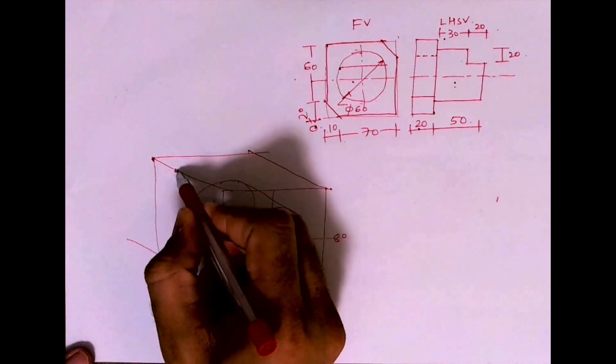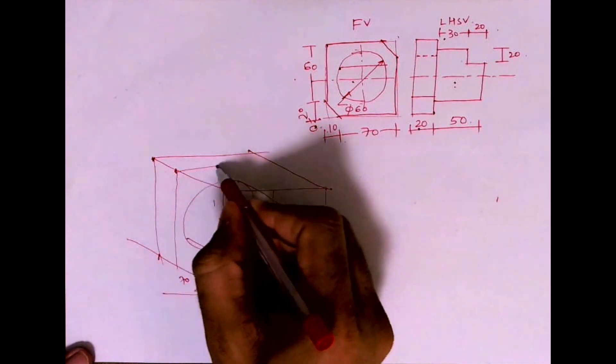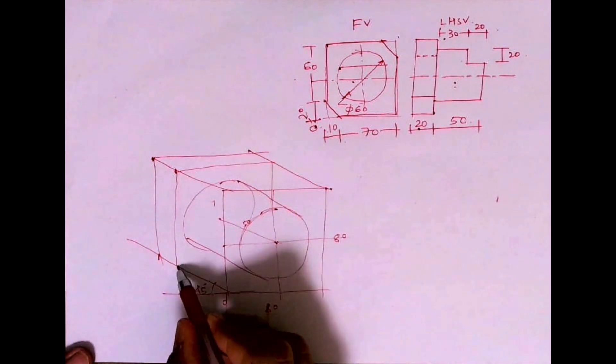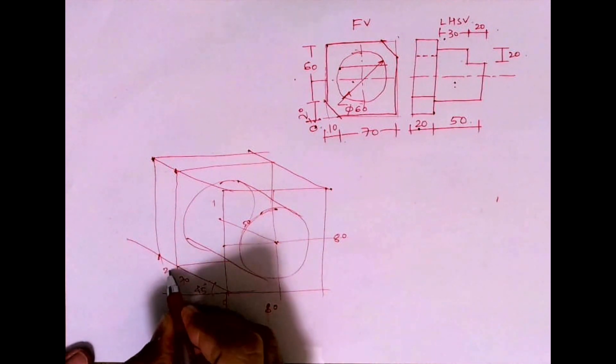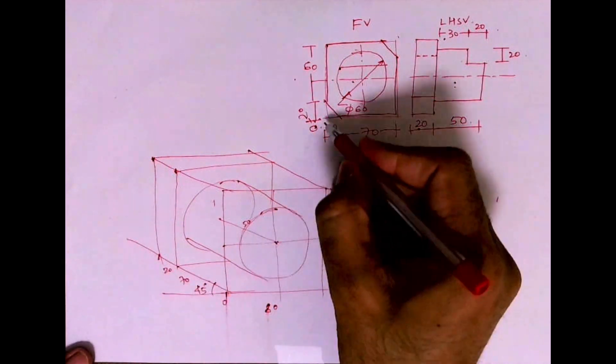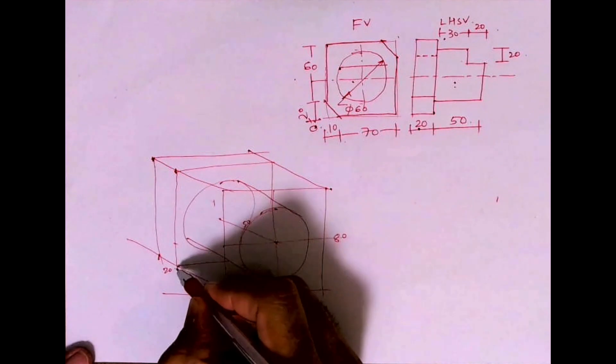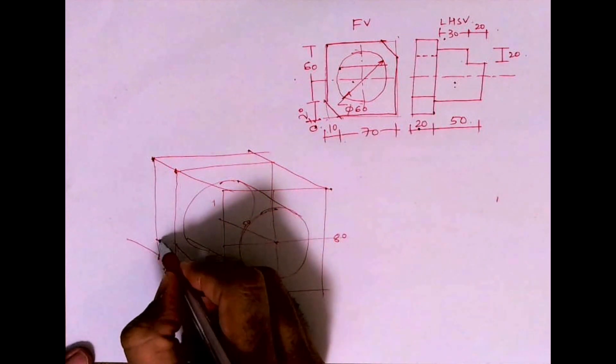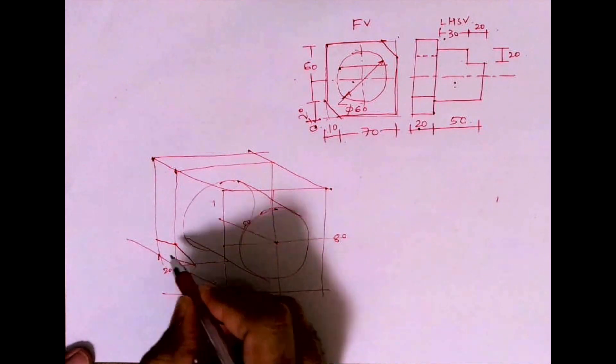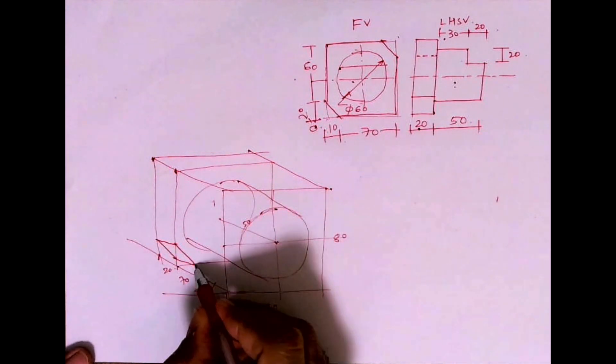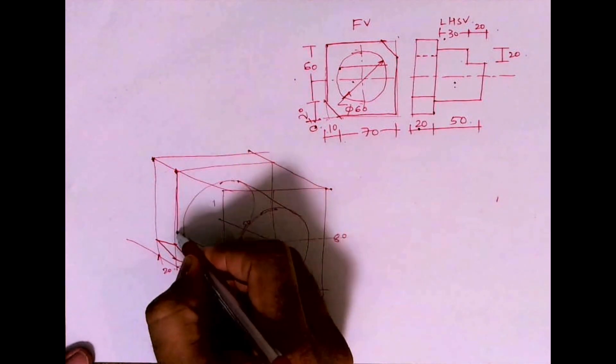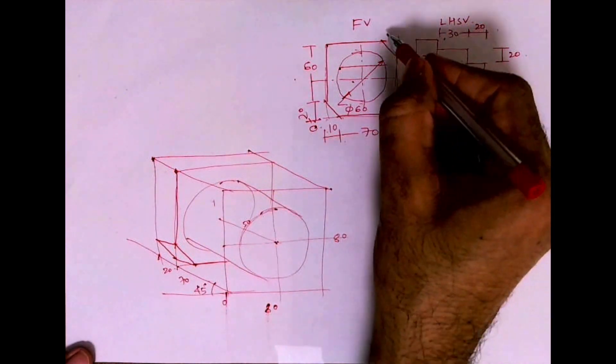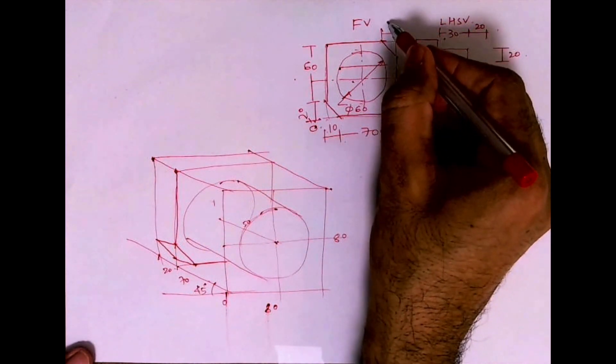After that, this plate, how much is this? 20 in width. If you see this is 20 by 10, you take 20 from here, 10 from here, join this, take it behind. This will be dark here also, the same 10, 20.